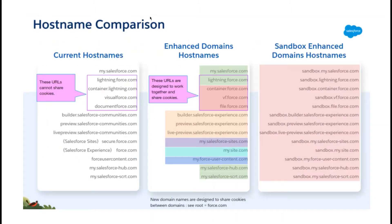Host name comparison — this is a chart showing current host names, enhanced domain host names, and sandbox domain host names. Right now you have lightning.force.com or my.salesforce.com.